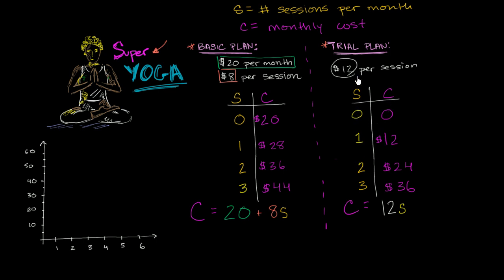I'm going to do it for the trial plan and the basic plan. Down here on the horizontal axis, I'm going to plot the number of sessions that I attend. So S equals the number of sessions I attend per month. And then on the vertical axis, I'm going to plot how much it's going to cost me depending on how many sessions I attend. So C equals my monthly cost.